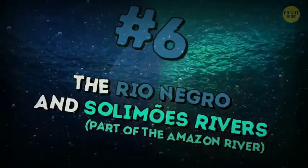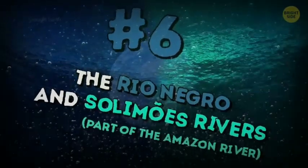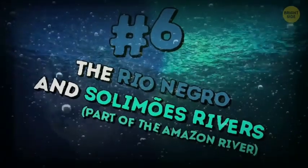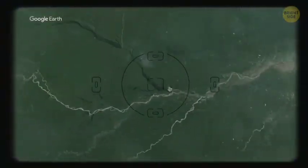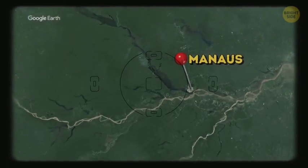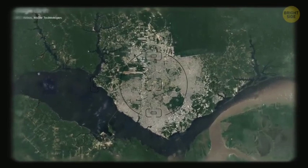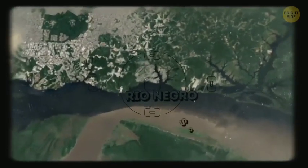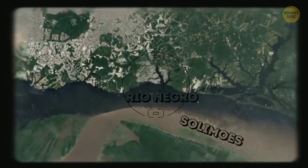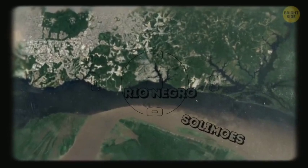The Rio Negro and Solomoes rivers, part of the Amazon River. Six miles from Manaus, in Brazil, Rio Negro and Solomoes rivers run into each other but don't mix for about two and a half miles. The Rio Negro is dark, and Solomoes light. They have a different temperature and speed of flow.